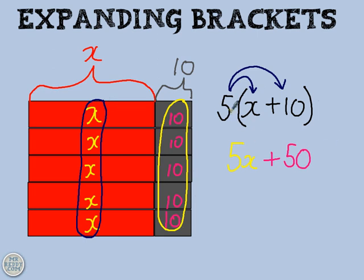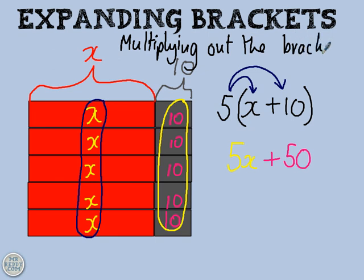And so when you expand the brackets, which is sometimes called multiplying out the brackets, you might see it written that way as well. When we do that, what you get is no more brackets, they've gone, and 5x plus 50.